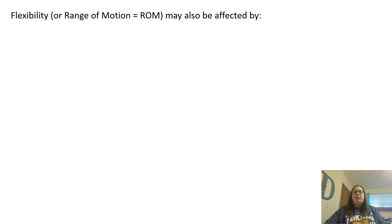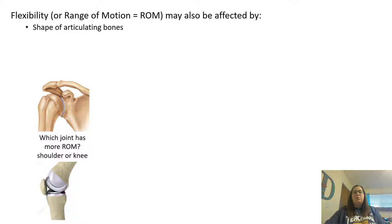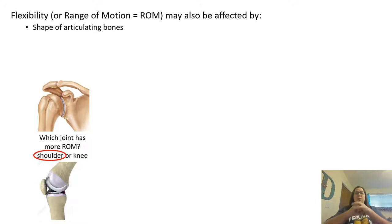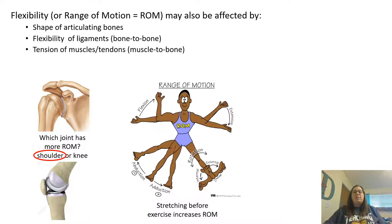Flexibility is also known as your range of motion, or ROM. These are going to be affected by a number of things. The shape of the articulating bones will determine how flexible or movable the joint is. For example, the shoulder has more range of motion than the knee because it allows for a ball-and-socket type of joint, so it's able to move in lots of different directions. The flexibility of your ligaments — the bone-to-bone connection — is also going to influence your flexibility, as will the tension of your muscles and tendons.